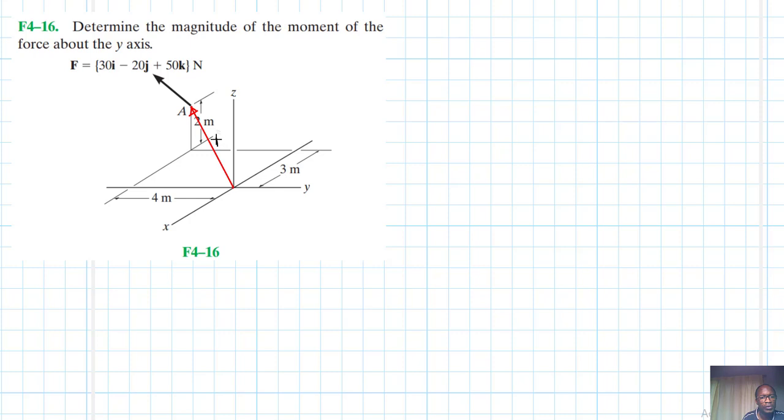We have a moment arm we are going to call this RA. Of course, coordinates for A: we have in the x-axis minus 3, in the y-axis we have minus 4, and in the z we have 2. Therefore, RA is equal to minus 3i minus 4j plus 2k.